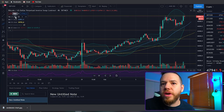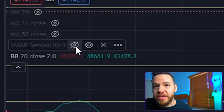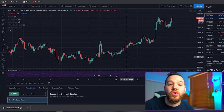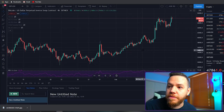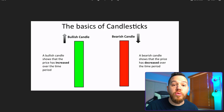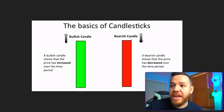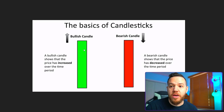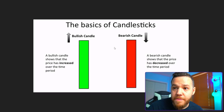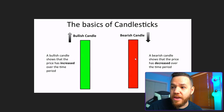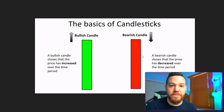The first thing we're going to do is strip this chart naked — we're going to take off every single indicator that we have on here, so now we are only looking at the candlesticks with none of the fancy stuff. Candlesticks in the most basic sense show you a bullish candle and a bearish candle. A bullish candle shows that the price has increased over that period of time, and a bearish candle — which is red — shows that the price has decreased over that period of time.